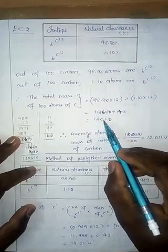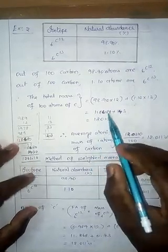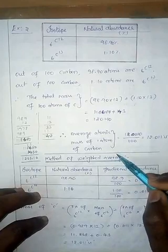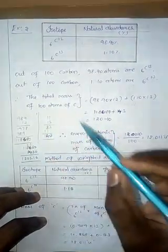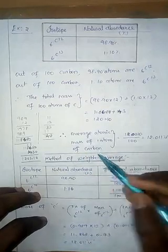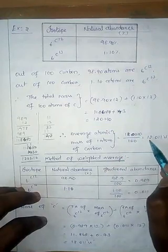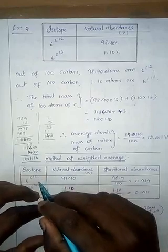So you add it, you'll get one thousand two hundred and one point one zero. This is the value, so you can see the calculation here. So this is the mass of hundred atoms. How will you calculate the mass of one atom or take an average? This number divided by hundred, so we will get twelve point zero one one, right?